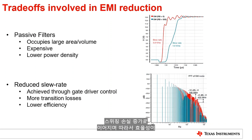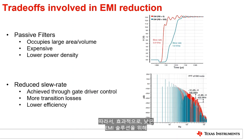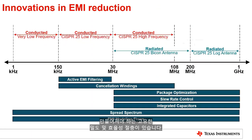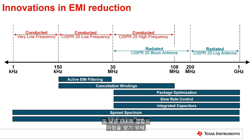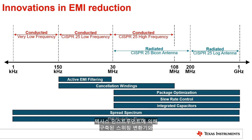To break this trade-off and obtain the combined benefits of high power density, high efficiency, and low EMI, a host of techniques as listed in this slide are employed by the switching converters and controllers built by Texas Instruments. These techniques are tailored to specific frequency bands of interest and are described in depth in the follow-on videos that are available in this low EMI video series.